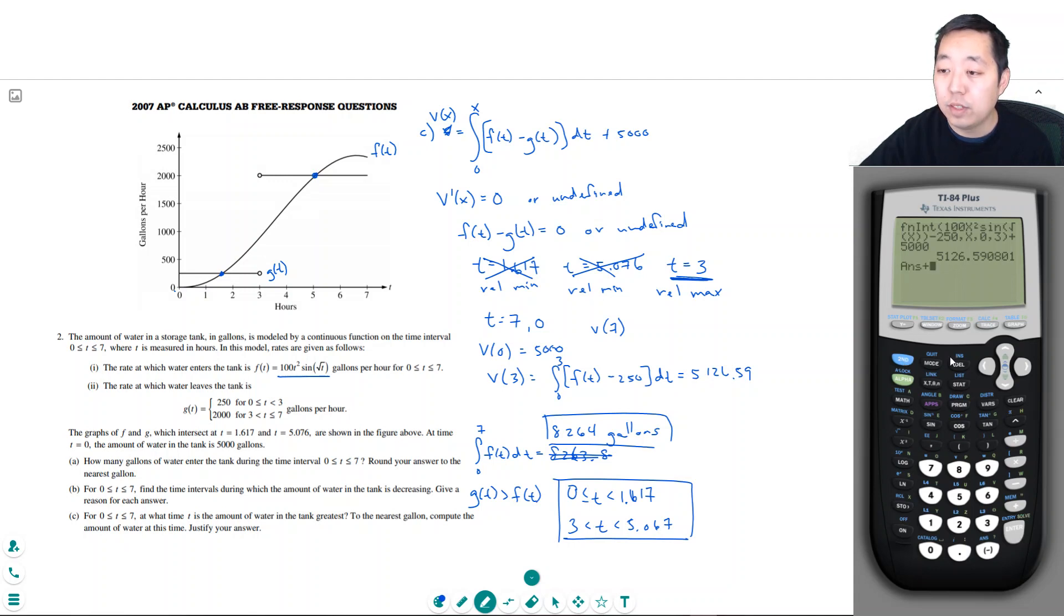So we're going to add this value. We're going to add the integral. Same integral except now the g will increase. So we'll do 100 x squared sine square root of x minus 22,000. And then we want to integrate over x from 3, because I've already calculated the volume up to 3. So I need to add the change in volume from 3 to 7. So V of 7 is 4513.8. So this is the maximum right here. The time is 3. And the nearest gallon, so t equals 3. The nearest gallon would be 5127 gallons.